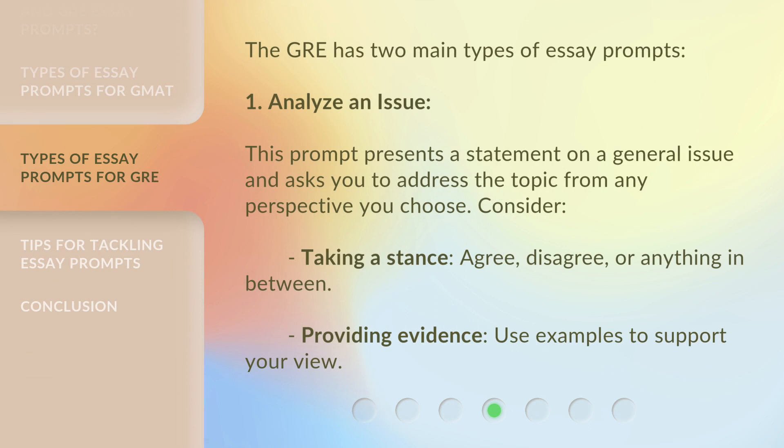The GRE has two main types of essay prompts. One: Analyze an Issue. This prompt presents a statement on a general issue and asks you to address the topic from any perspective you choose. Consider taking a stance — agree, disagree, or anything in between — and providing evidence by using examples to support your view.